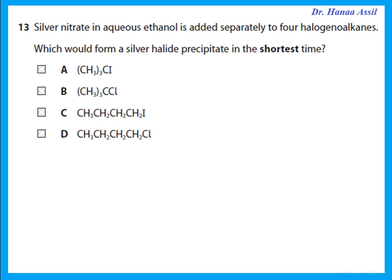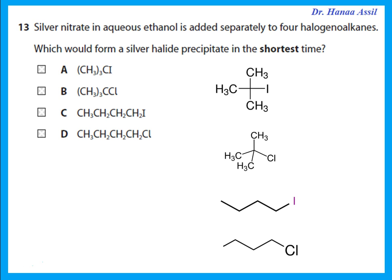Silver nitrate in aqueous ethanol is added to four haloalkanes — which forms a silver halide precipitate in the shortest time? The choices are tertiary iodide, tertiary chloride, primary iodide, and primary chloride. Tertiary reacts faster than primary, so the answer is A or B. Between the tertiary iodide and tertiary chloride, iodide reacts faster — it forms a tertiary carbocation more readily, producing a silver halide precipitate with the silver nitrate solution.